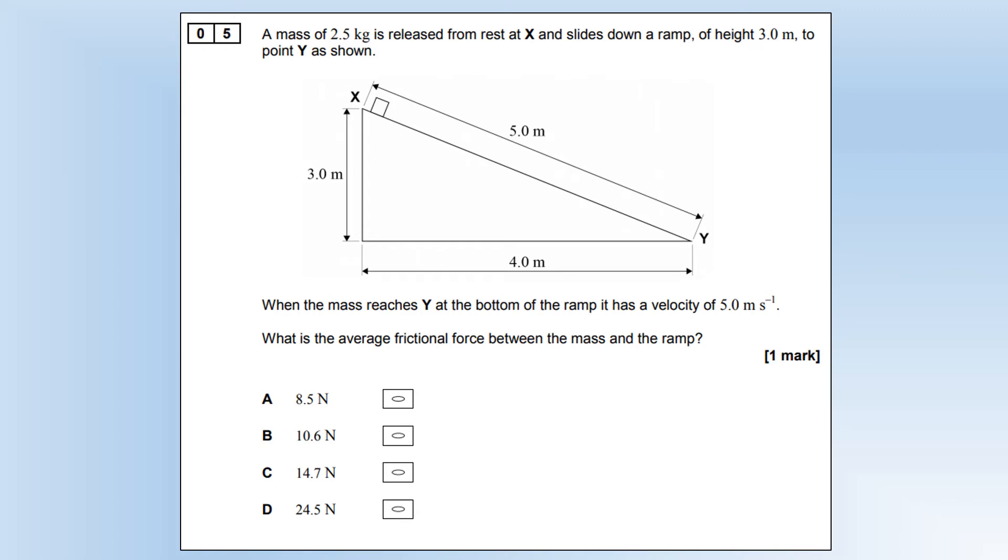Looking at the multiple choice questions, a mass of 2.5 kg is released from rest at x and slides down a ramp of height 3 meters to the point y shown. When the mass reaches y at the bottom of the ramp, it has a velocity of 5 meters per second. What is the average frictional force between the mass and the ramp?